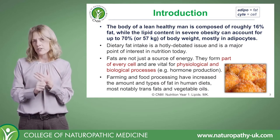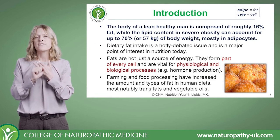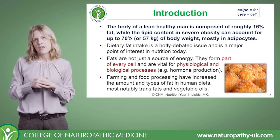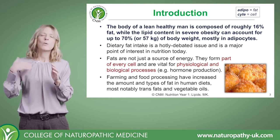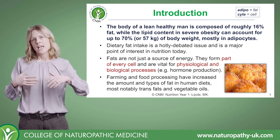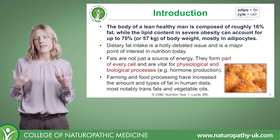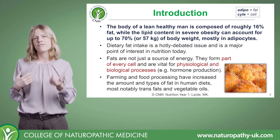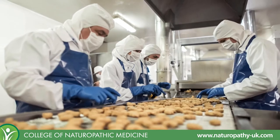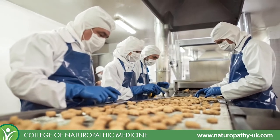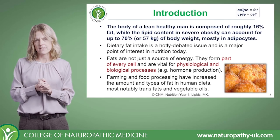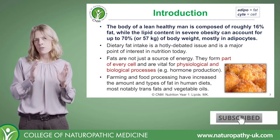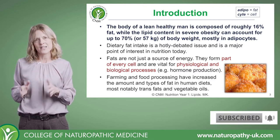Lipids also form part of every cell, so they're vital for physiological and biological processes — things like hormone production. We'll progressively look at the types and amounts of fat that are ideal. We also need to consider how farming and food processing have altered the amounts and types of fats in the human diet, most notably the intake of trans fats and the way vegetable oils have been adulterated.